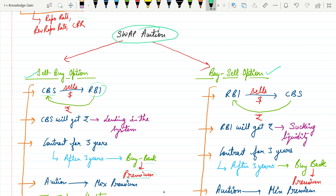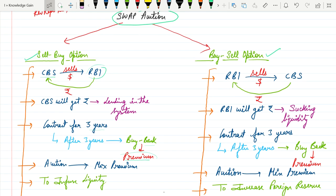These transactions are basically dependent on a contract. This contract is for three years. After three years, the commercial banks will buy back these same dollars at a premium. For this, RBI will set up an auction to get maximum premium. So basically government opts this SELL BUY option to infuse liquidity in the market.